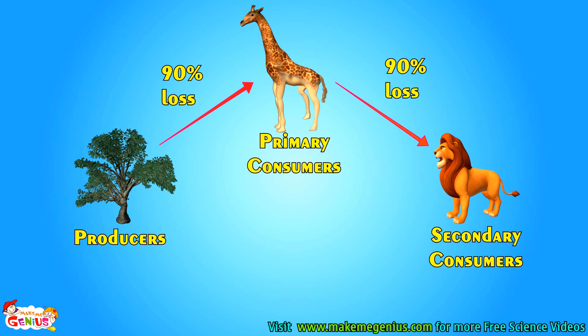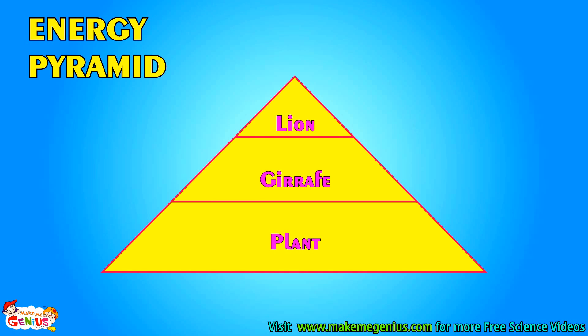So does a giraffe get all the energy from a plant which the plant gets from the sun? Or does a lion get all the energy from a giraffe which the giraffe gets from the plant? The answer is no. Actually, 90% of energy is lost when it passes from one part of the chain to another. Like 90% energy is lost when a giraffe eats a plant. Similarly, 90% energy is lost between the lion and giraffe.